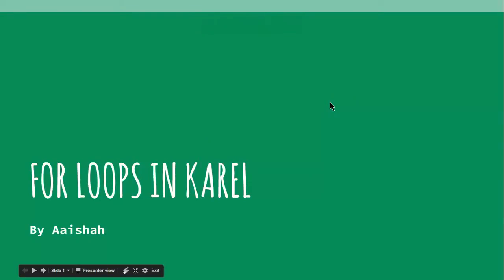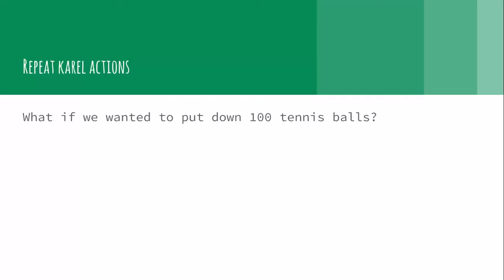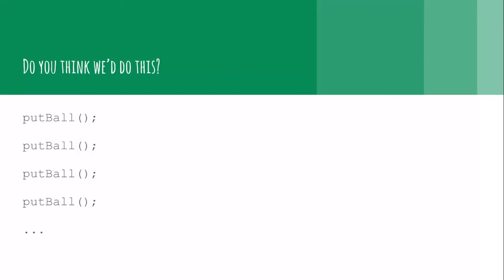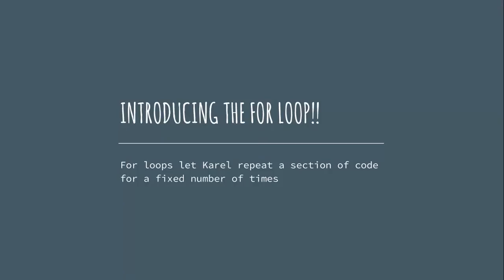Hello everybody, and today I will teach you how to use for loops in Karel. What if we wanted to put down a hundred tennis balls? Do you think we do this: put ball, put ball, put ball, put ball, put ball, and so on? Introducing the for loop! For loops let Karel repeat a section of code for a fixed number of times.